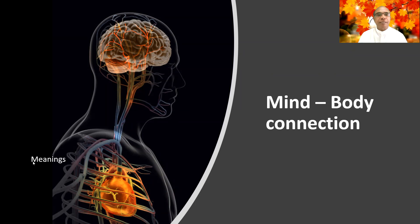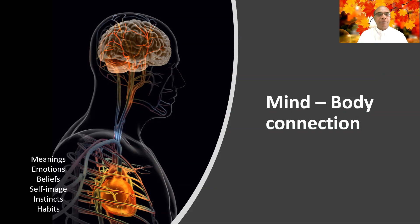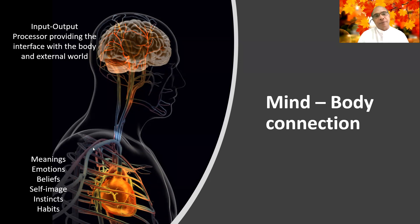The body is continuously listening to and responding to the commands and thoughts of the mind — like a slave. So that is the interconnection: one is like the master, the other like the slave. The mind derives meanings; the body can't derive any meaning. Mind has emotions, the body has no emotions. Mind has beliefs, self-image, mental formations, instincts, and habits — whereas the body has no habits at all. In medical terms, those parts of the mind have been identified as the psycho part.